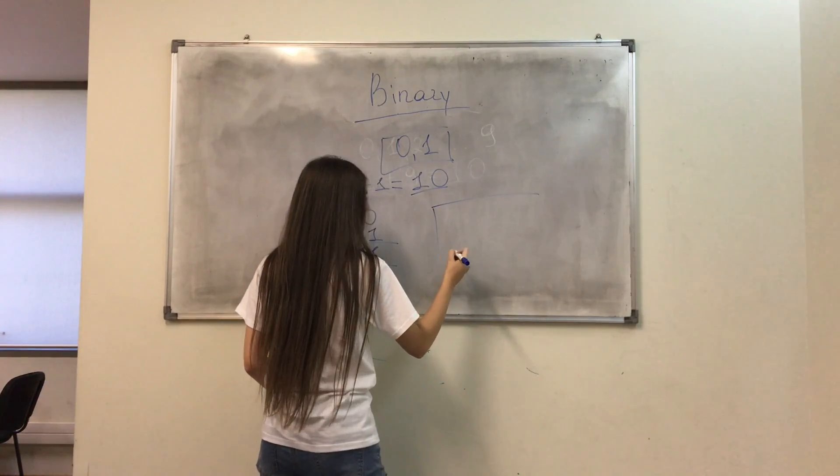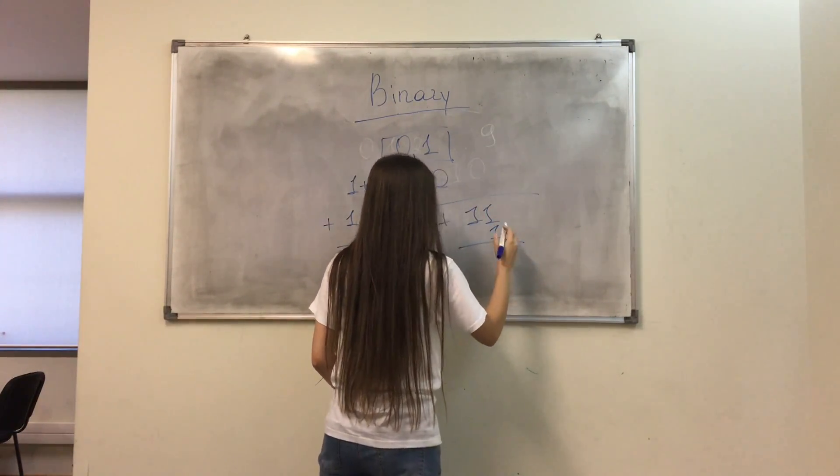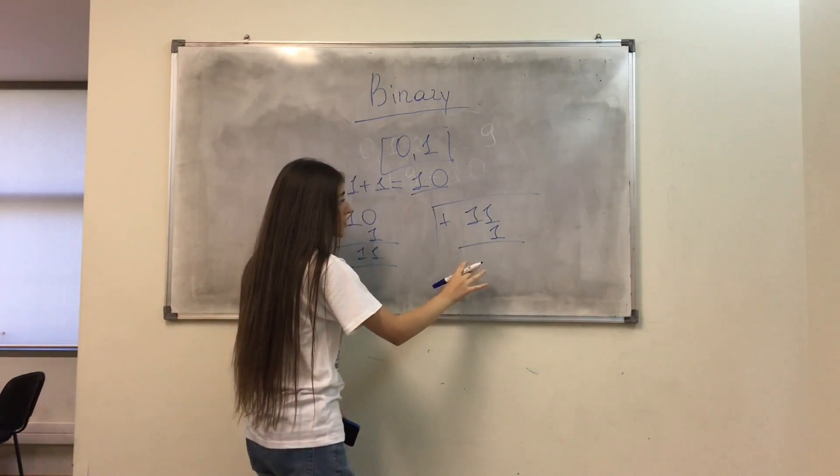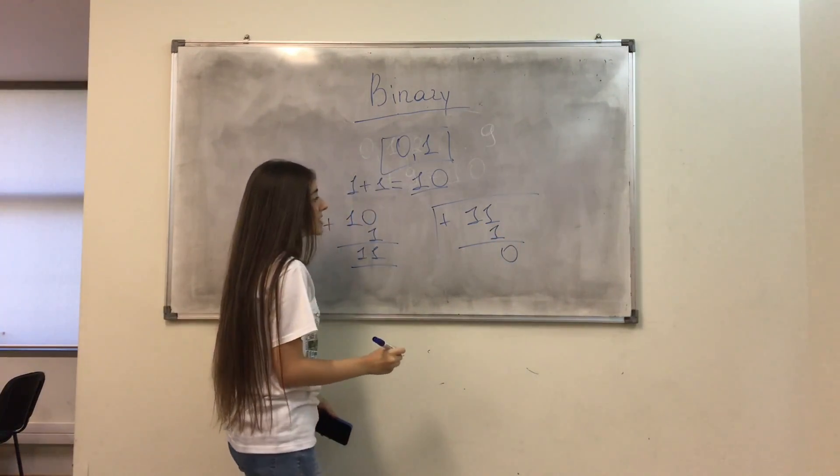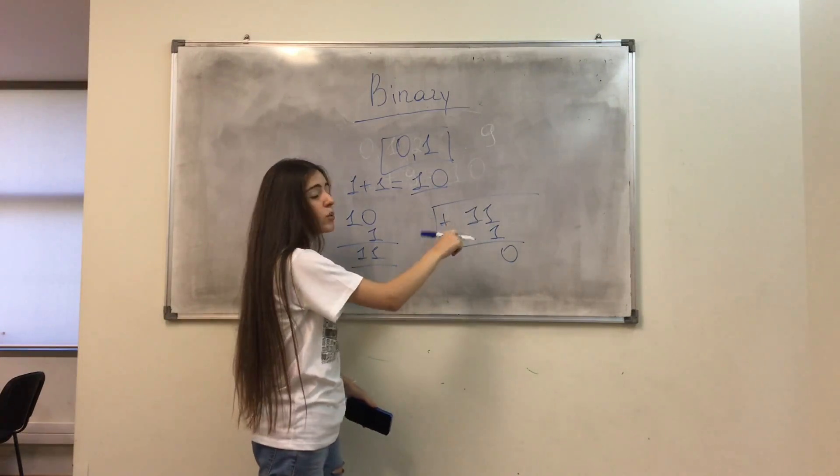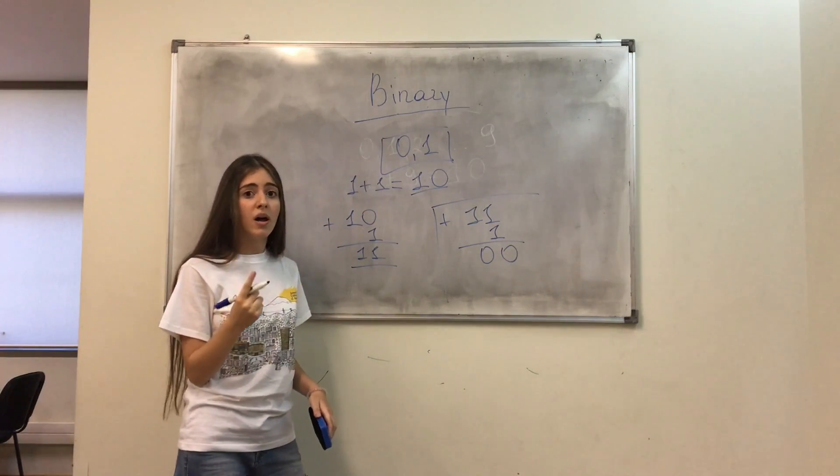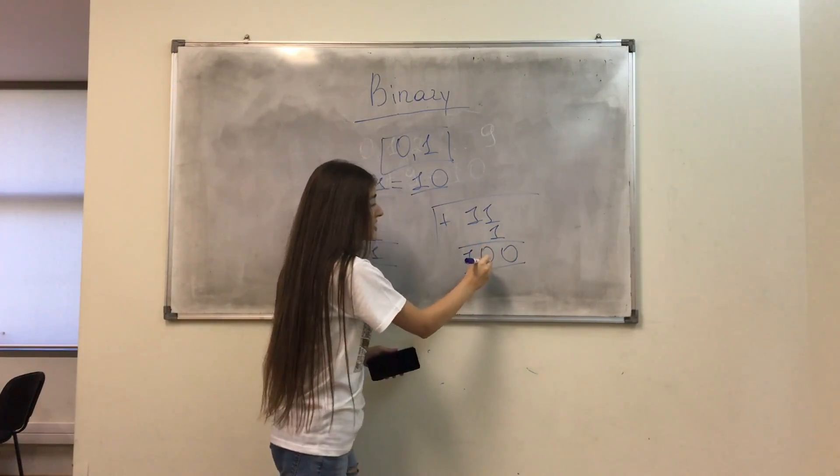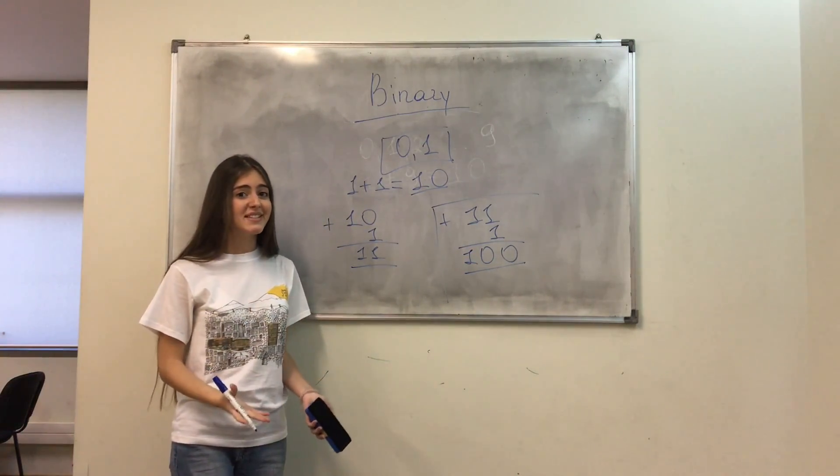The same is for 4. I should add 1 to the number 3. And there are no more numbers to write, so I will get the first digit 0 and I will pass the 1 to the left position. I got 100 and it represents the number 4 in a binary system.